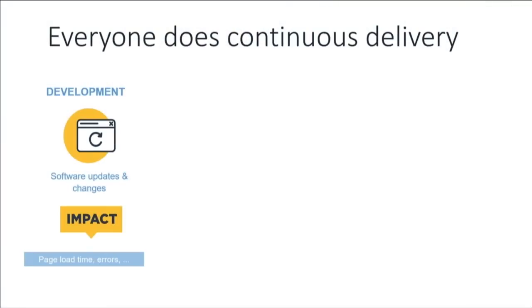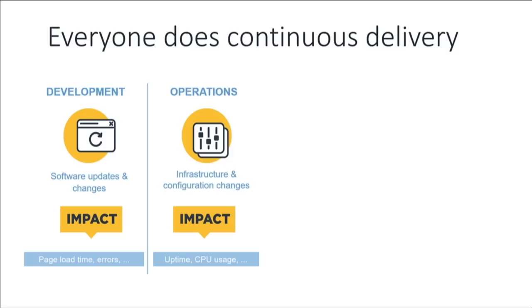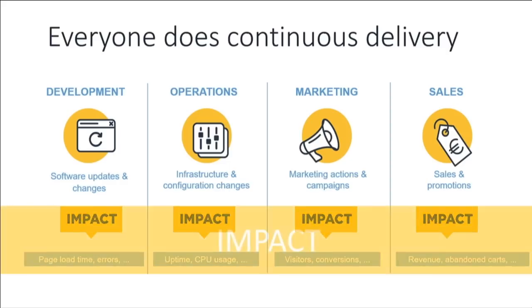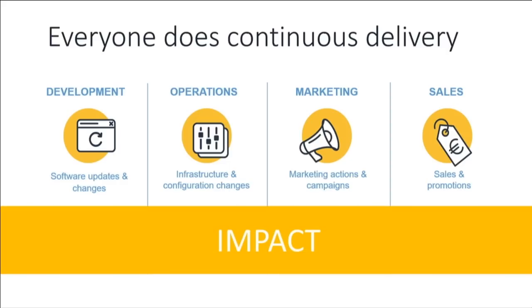You will soon realize that everyone in your organization is doing continuous delivery. Your development team is pushing software updates. Your operations team is doing infrastructure changes. Your marketing and sales are doing campaigns and promotions. And traditionally, they have all been looking at their own metrics, while they have a huge impact on each other.